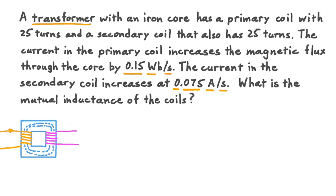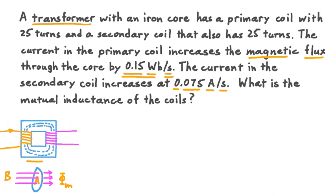The idea with a transformer is that as current changes and passes through the primary coil, it creates a changing magnetic field that the core directs through the loops of the secondary coil. When the secondary coil experiences this change in magnetic flux, current is induced in it. The current in the primary coil is increasing, and it's affecting the magnetic flux in the core, which is increasing at a steady rate of 0.15 Webers per second. This drives an increasing current in the secondary coil — a changing current in one coil creates a changing magnetic flux, which induces a changing current in another coil. This means we have mutual inductance, and we want to calculate its value.